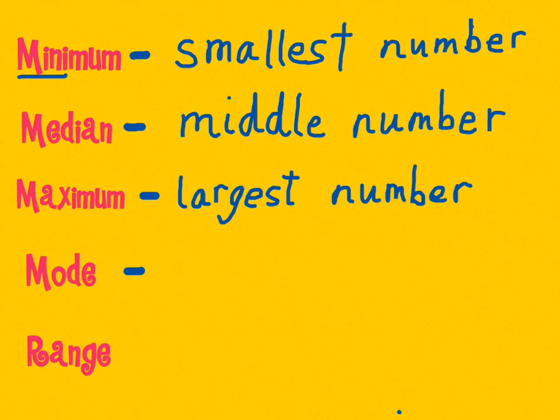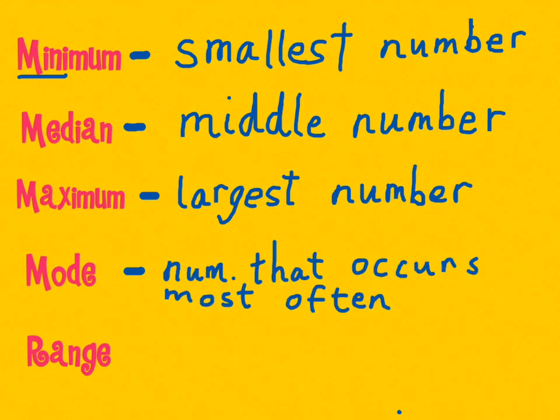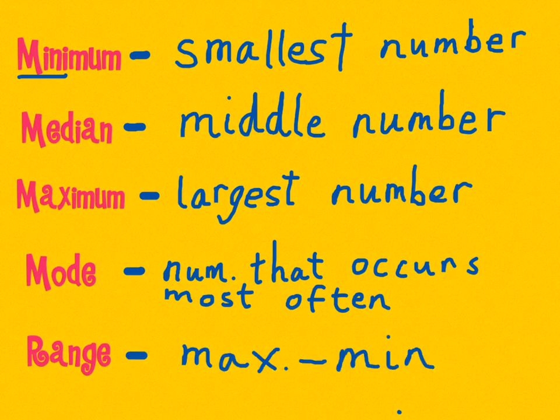Finally, the mode is our last M word and this is the number that occurs the most often. And the last one here, the range, is the difference between the maximum and the minimum. So I'll just write that as max minus min. And I think these will make a lot more sense once we take a look at a set of data.